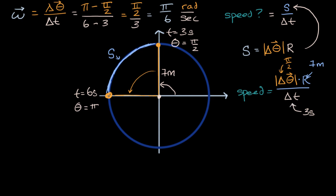But what's even more interesting is to recognize that what is the absolute value of our angular displacement over change in time? Well, this is just the absolute value of our angular velocity. So we could say that speed is equal to the absolute value of our angular velocity times our radius.